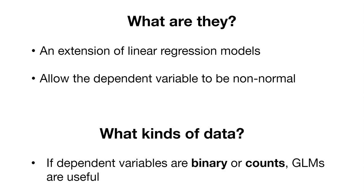If we have counts, we have different numbers of things that are occurring and we can use a generalized linear model to explain what's going on. Generally with count data we have numbers of observations as integers: 0, 1, 2, 3, all the way up to however many we might have. When data are binary or counts, generalized linear models are very useful.